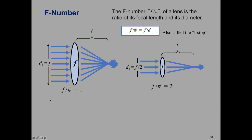One thing you hear about a lot in photography is a property of a lens called the F-number, written as F-slash or F-stop. This is defined as the ratio of the lens's focal length to its diameter. So if the focal length and diameter are equal, that's an F-number of one. If the diameter is half the focal length, that's an F-number of two.